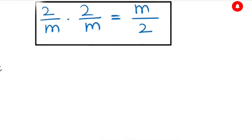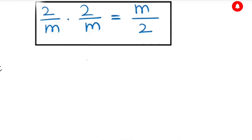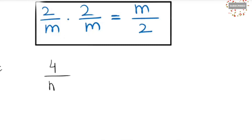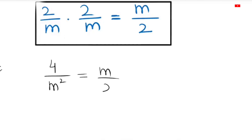In the first step, I will multiply the numerators and denominators: 2 times 2 gives us 4, over m times m gives m squared, so we get 4 over m squared is equal to m over 2.